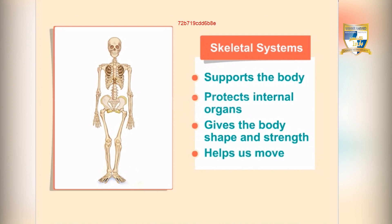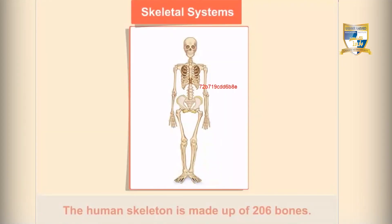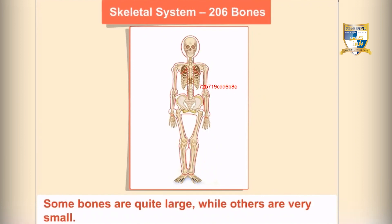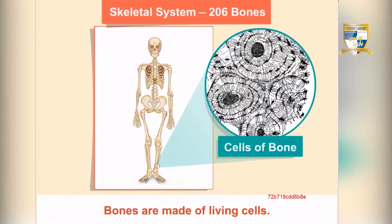The human skeleton is made up of 206 bones. Some bones are quite large while others are very small. Bones are made of living cells, which is why they grow as you get older.